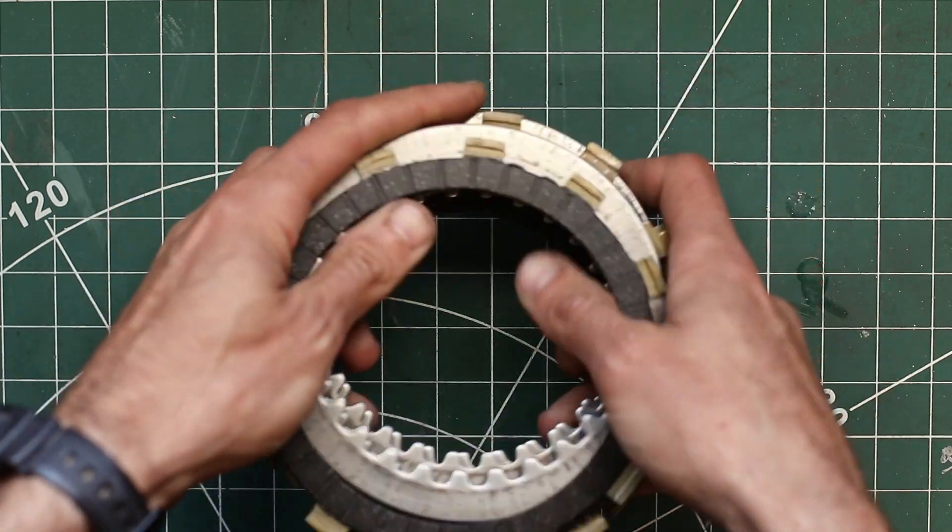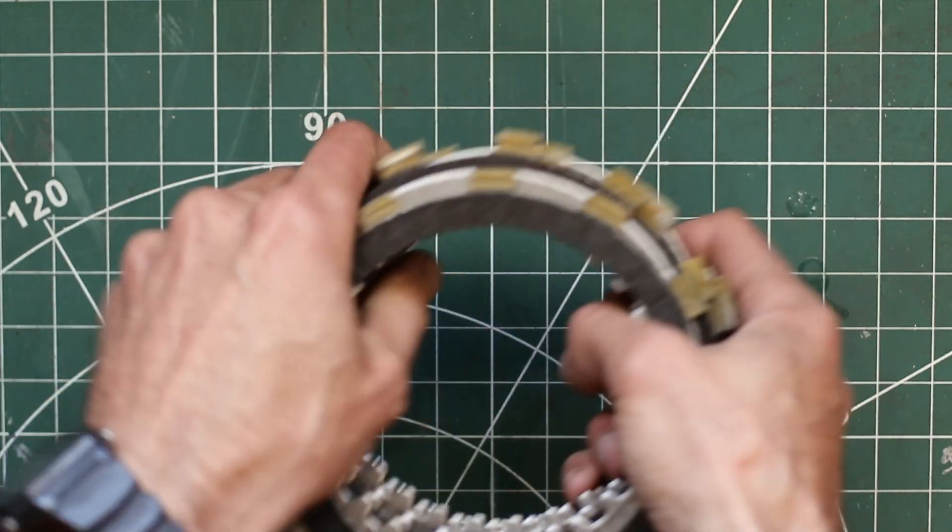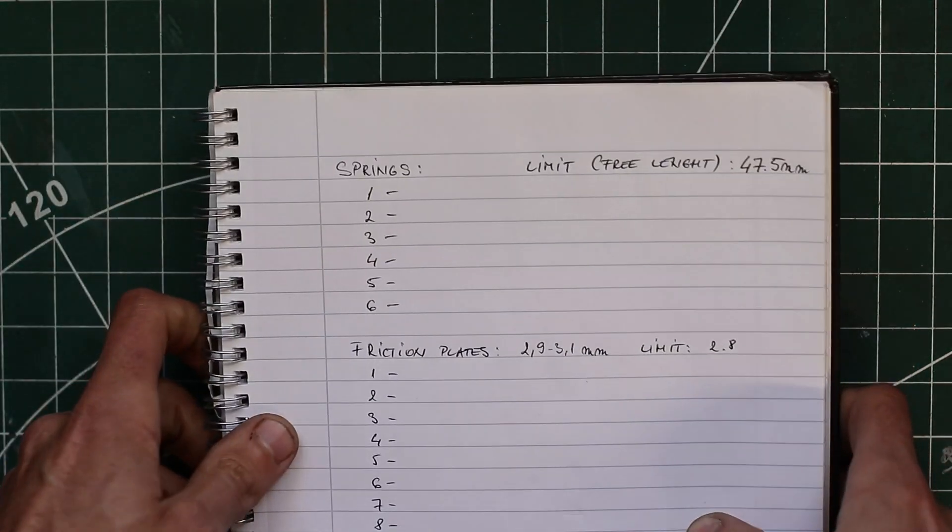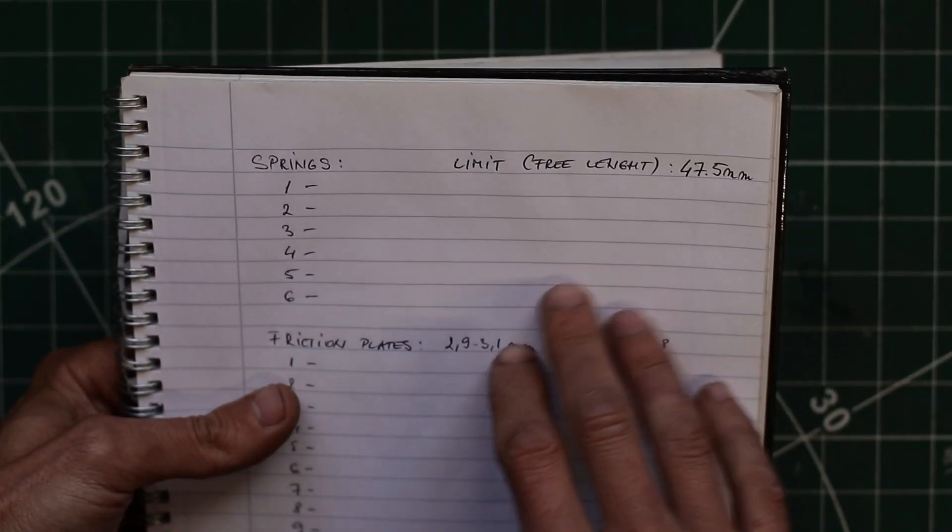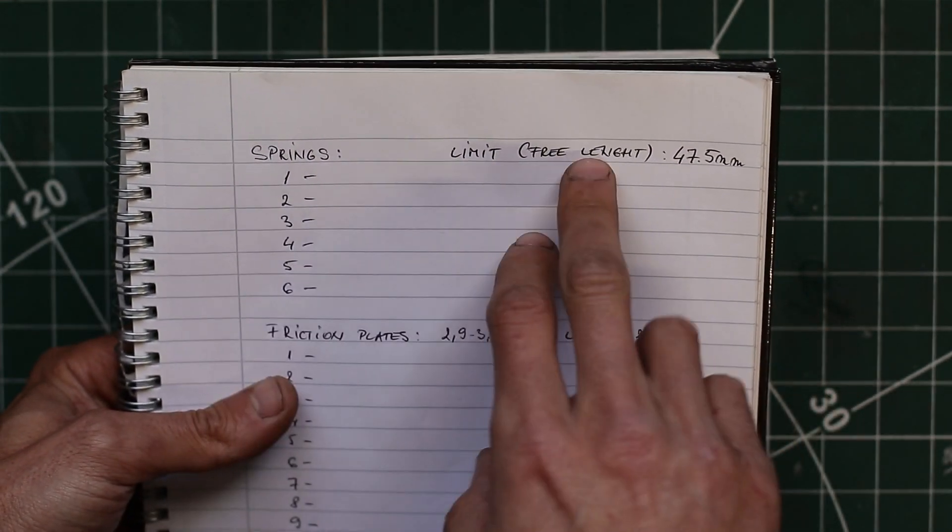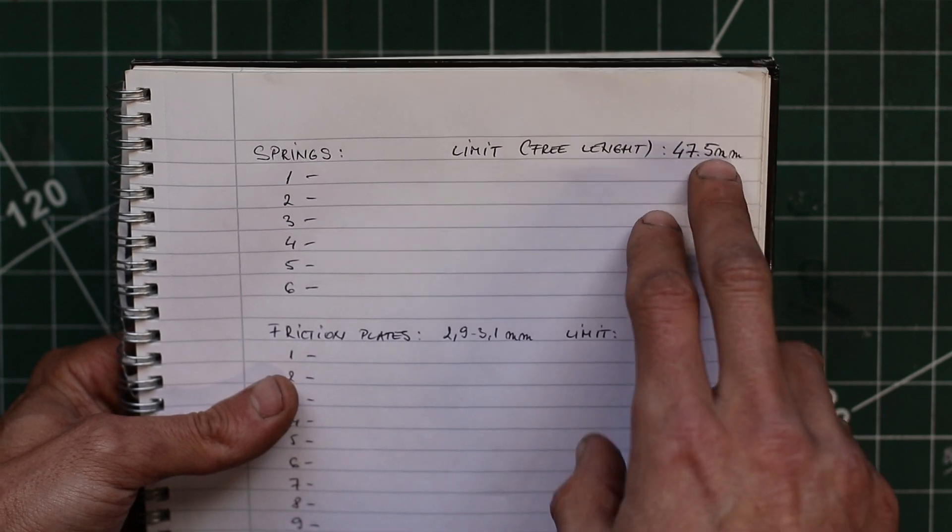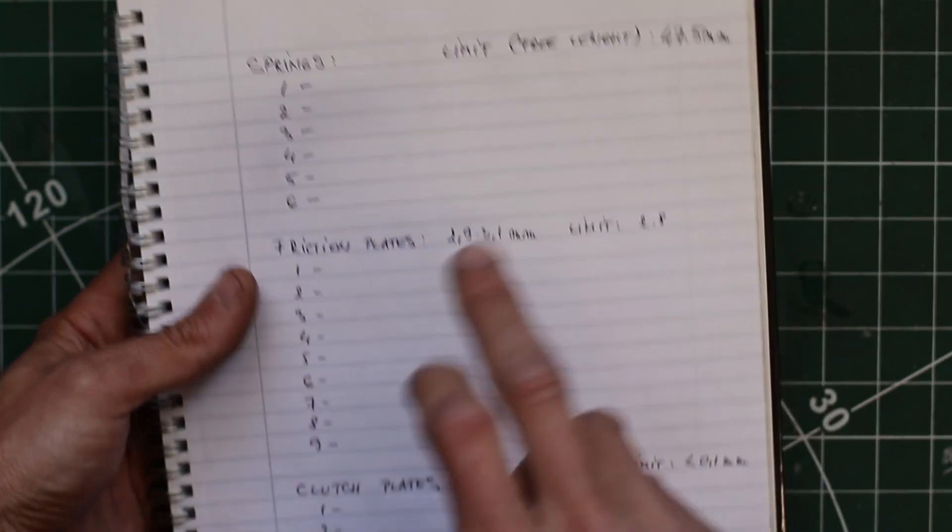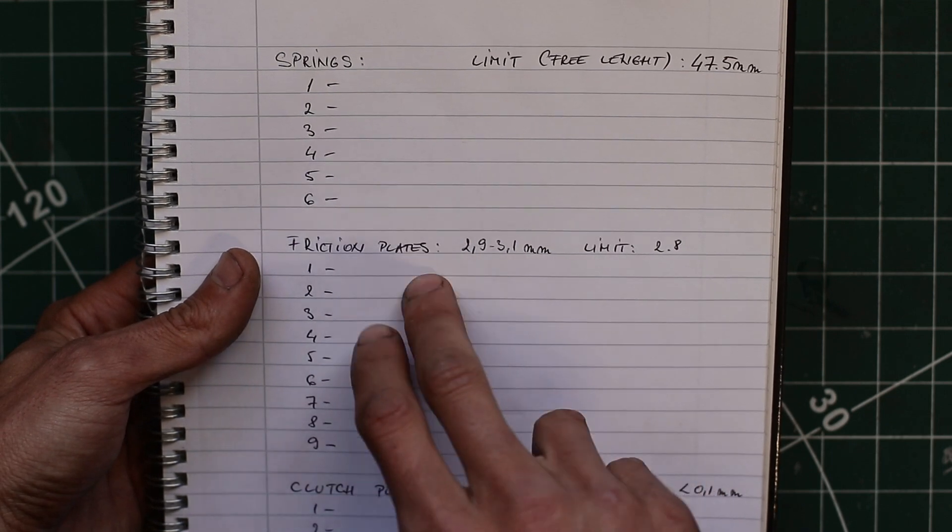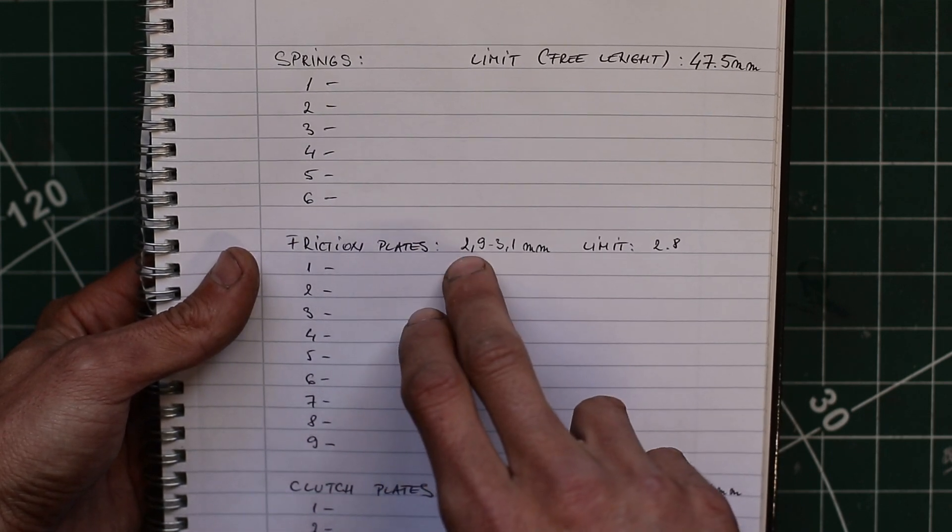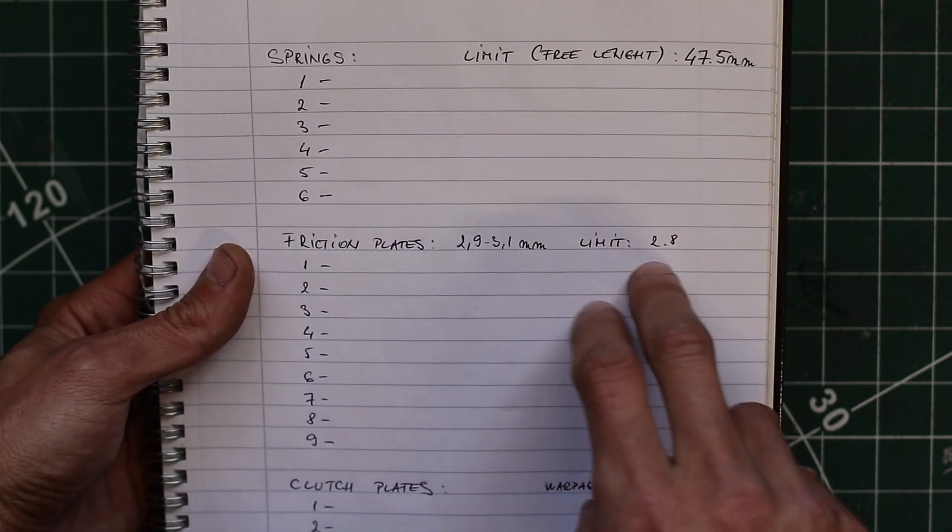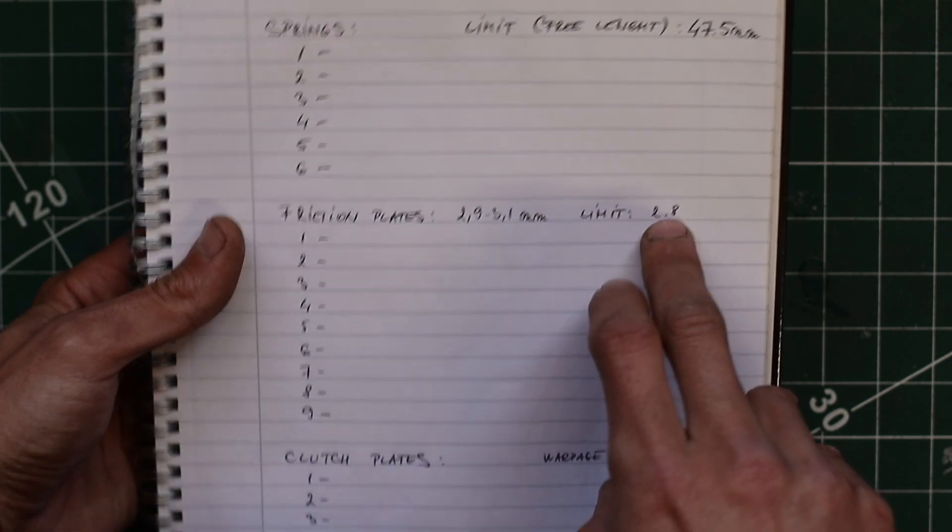Before we jump into any measuring, I've made a little list with the limits I looked up in the service manual. We've got a free length limit of 47.5 millimeters for the clutch springs. For the friction plates, they need to be within 2.9 to 3.1 millimeters in thickness, and the limit is 2.8 millimeters.